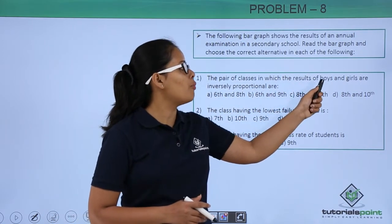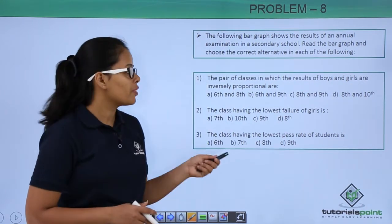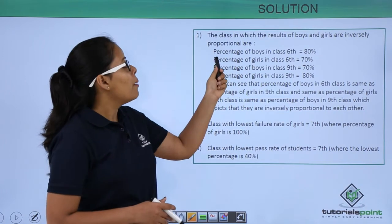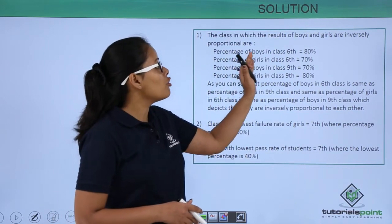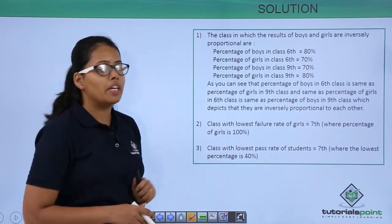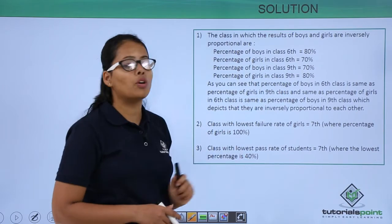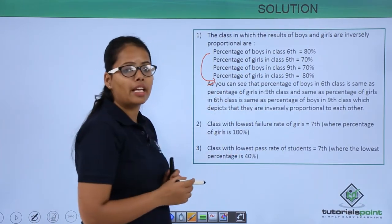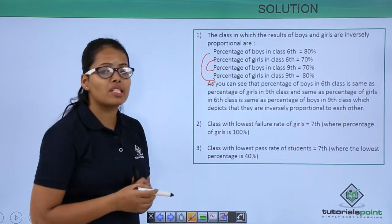The first question asks for the pair of classes in which the results of boys and girls are inversely proportional. When you analyze the bar graph, you can see that the percentage of boys in class 6 was 80% and the percentage of girls in class 6 was 70%. The percentage of boys in class 9 was 70% and the percentage of girls in class 9 was 80%. So the percentage of boys in class 6 became the percentage of girls in class 9, and the percentage of girls in class 6 became the percentage of boys in class 9 — that's what inversely proportional means here.